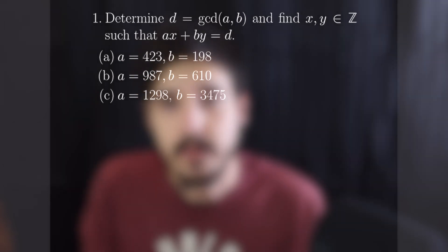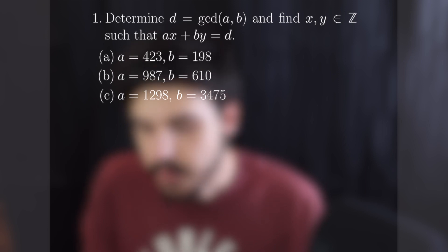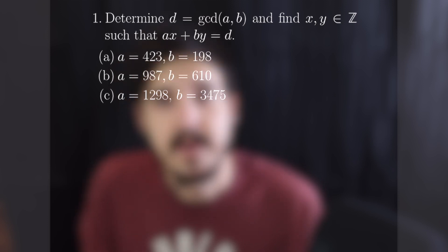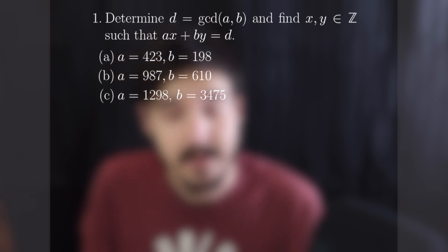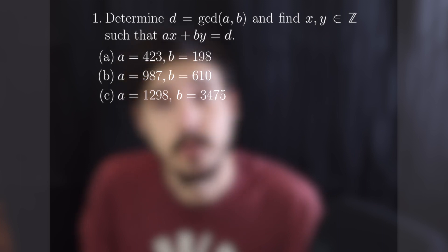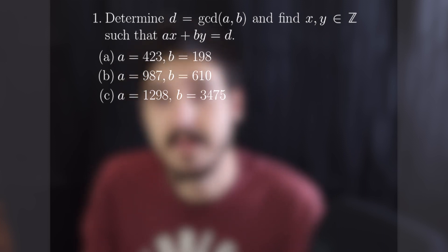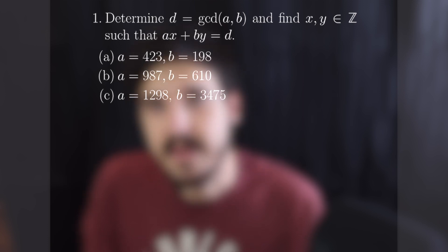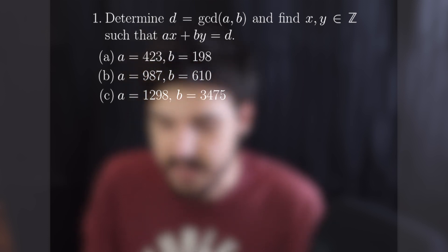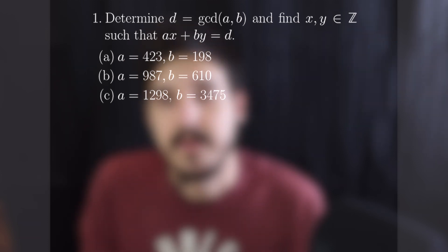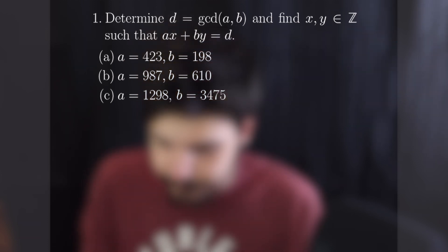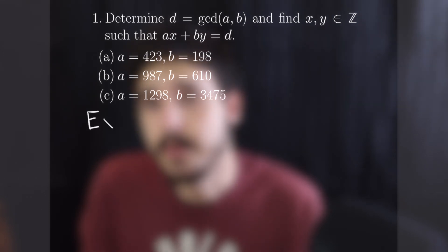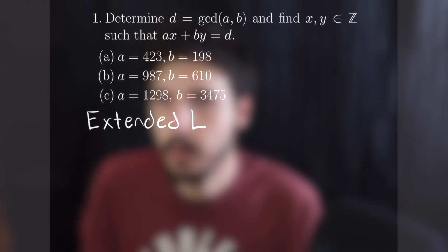The first type of problems we're going to do is find the GCD of two numbers and then find the linear combination that constructs that GCD. We're going to start with 423 and 198. You can find the greatest common divisor a number of ways — the extended Euclidean algorithm is especially convenient when you want to find the linear combination, but you can also break it down into primes. We're going to use the extended Euclidean algorithm to show how it works.